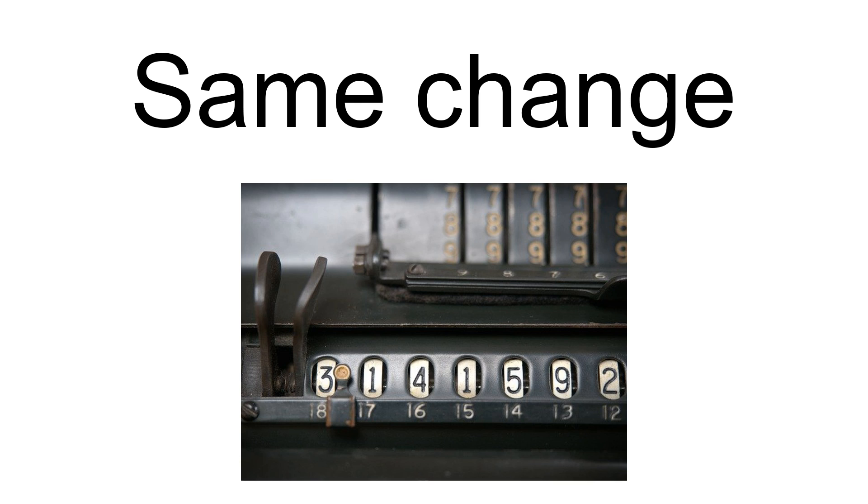The same change method uses the fact that adding or subtracting the same number from the minuend and subtrahend does not change the answer. One simply adds the amount needed to get zeros in the subtrahend. Example: 1234 minus 567 can be solved as follows: 1234 minus 567 equals 1237 minus 570 equals 1267 minus 600 equals 667.